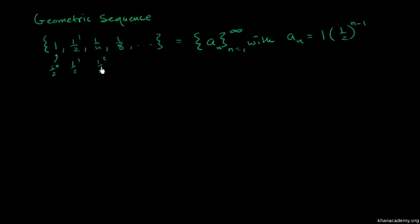The formula is 0.5 to the power n minus 1, or 1 over 2 to the power n minus 1. This is a geometric sequence.